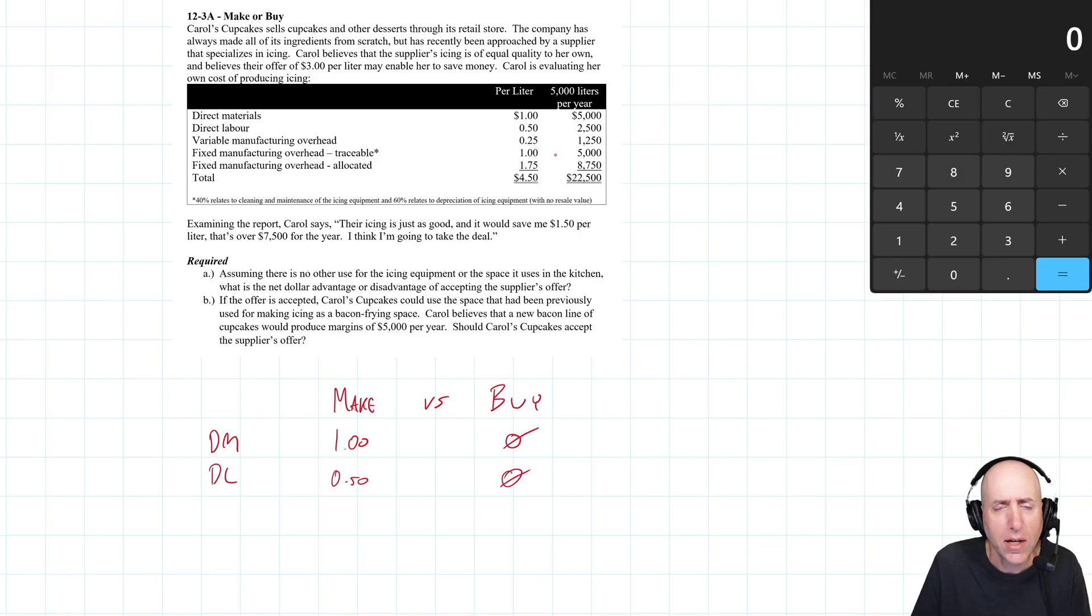Variable overhead. Variable costs tend to be relevant. Fixed costs tend not to be relevant. That's a sort of rule of thumb. There are exceptions as we will soon find out, but variable overhead, that's a relevant cost. You make more icing, you pay more variable costs. You make less icing, you're going to make less variable costs. And if you buy, you're not making anything. So the cost is different there, right? The cost would go to zero.